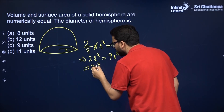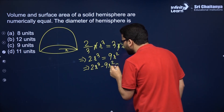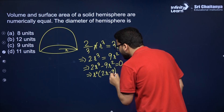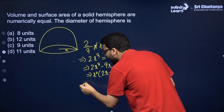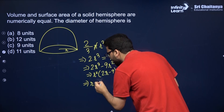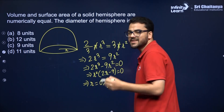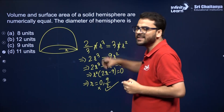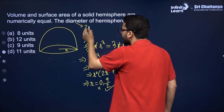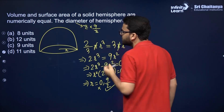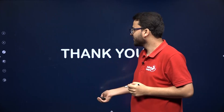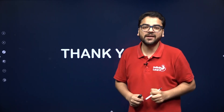So 2R³ − 9R² = 0. Taking R² as common: R²(2R − 9) = 0. The two values of radii are 0 and 9/2. Obviously the radius cannot be 0, so we neglect that value. Therefore R = 9/2. You have to find the diameter, which is 2 times the radius: 2 × 9/2 = 9 units. That's all for the MCQs in the chapter Surface Areas and Volumes.